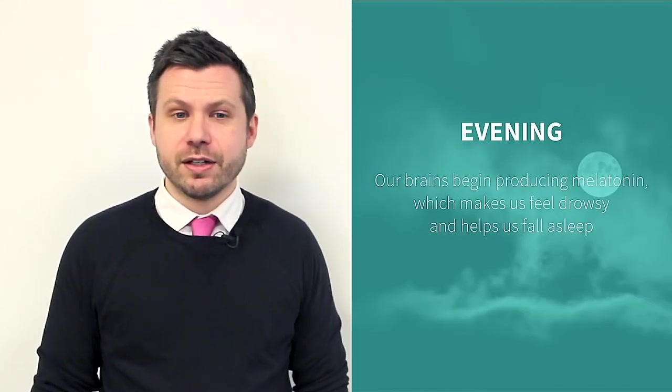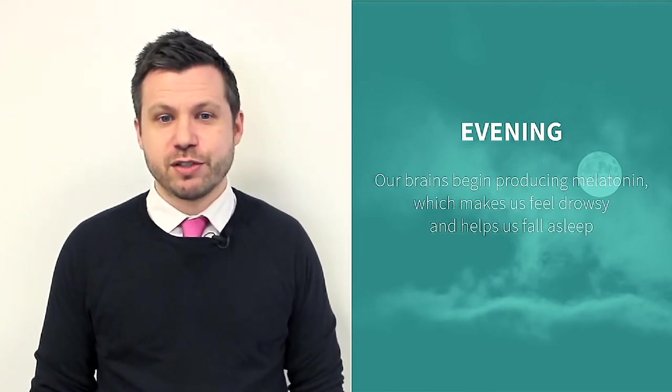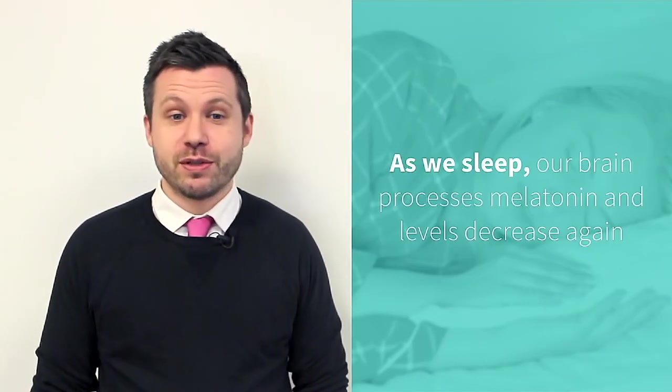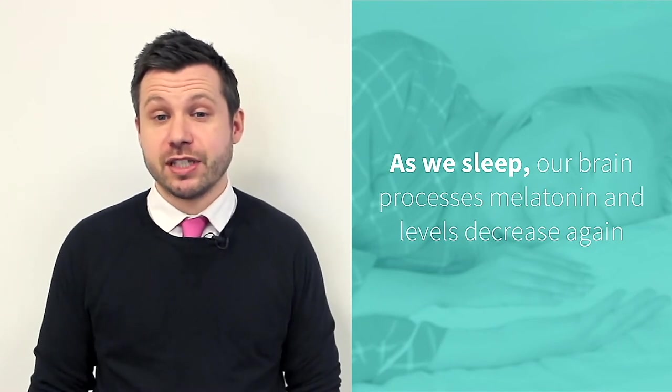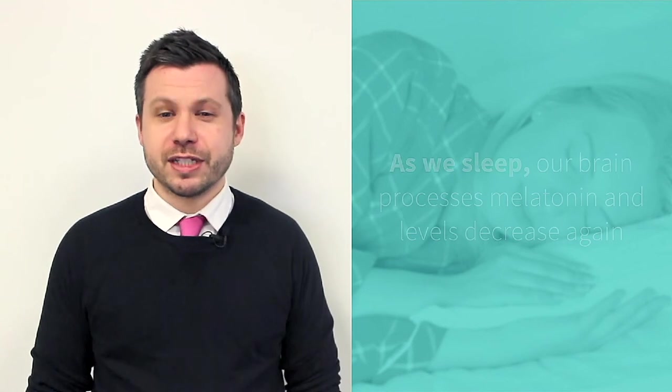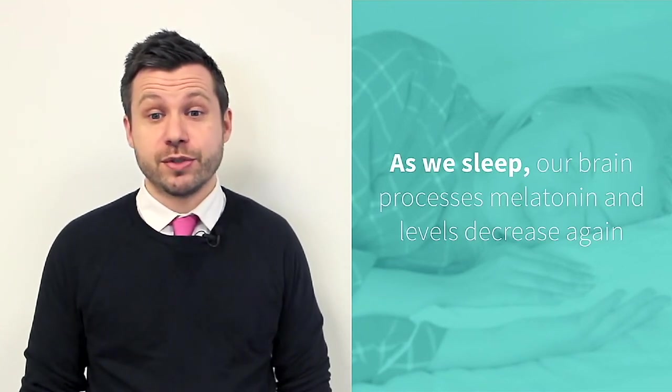In the evening, when the sun goes down, our brain begins producing a hormone called melatonin, which makes us feel drowsy and helps us fall asleep. As we sleep, our brain processes melatonin and levels decrease again, preparing us to go through this cycle again the next day. Our homeostatic rhythm works independently of this, and for people who are sleeping normally, these two rhythms are in sync.